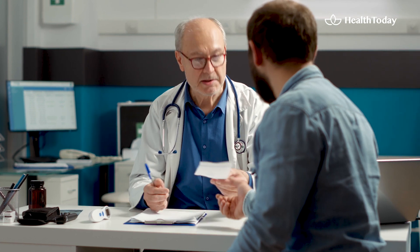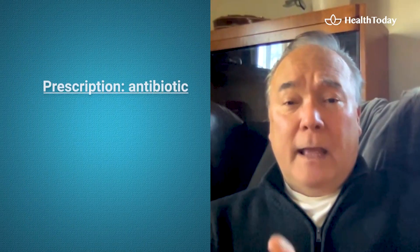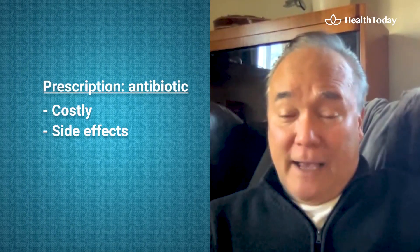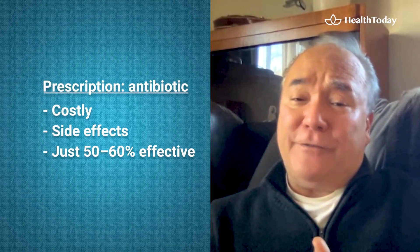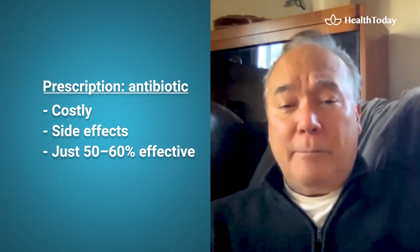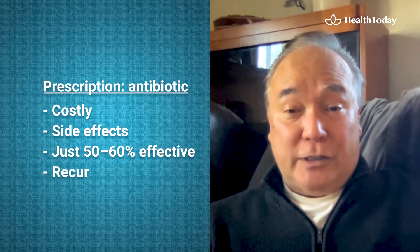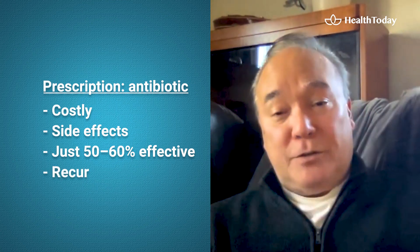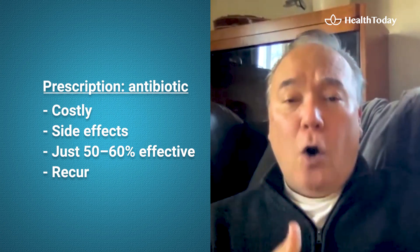If you're lucky enough to have a gastroenterologist who does know something about SIBO, they'll typically hand you a prescription for the antibiotic rifaximin or Xifaxan — very costly, with side effects, and about 50 to 60 percent effective. Then you'll come back with recurrences because it loves to recur, getting another prescription for antibiotics over and over, and each time you get sicker because you're ruining your microbiome.